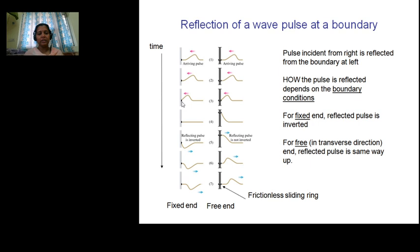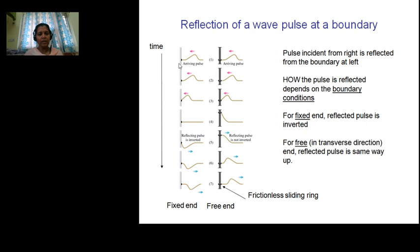The string is trying to move particles in the upward direction and the rigid support is trying to move particles in the downward direction. As a result, we get an inverted pulse. Because of the downward force, the particle starts oscillating and energy is transferred from one particle to the other. The incident pulse and reflected pulse have all the same wave properties — amplitude, frequency, wavelength, and wave speed — but the reflected wave gets inverted.